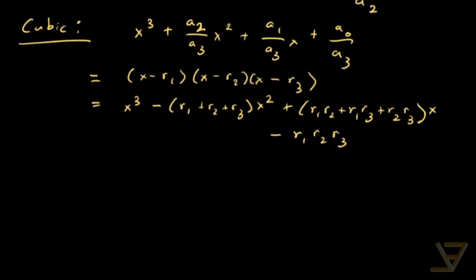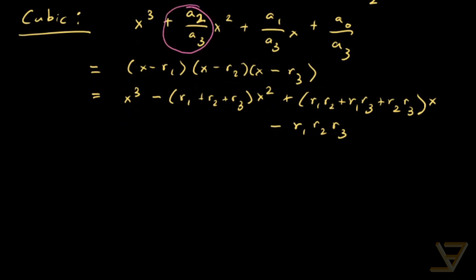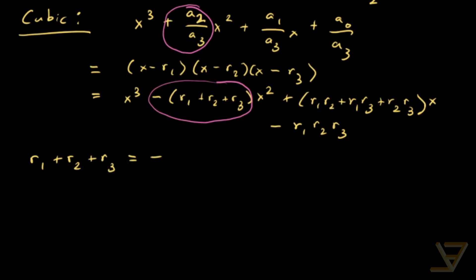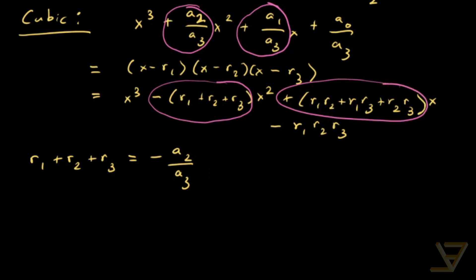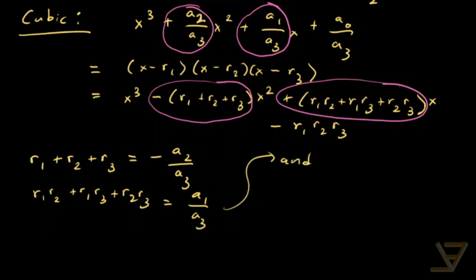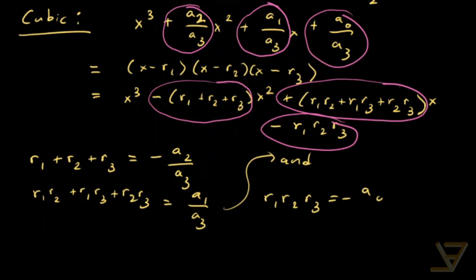Now let's compare coefficients. We match a_2/a_3 with -(r_1 + r_2 + r_3), giving r_1 + r_2 + r_3 = -a_2/a_3. Then we match a_1/a_3 with the symmetric sum, giving r_1 r_2 + r_1 r_3 + r_2 r_3 = a_1/a_3. And finally, a_0/a_3 matches with -r_1 r_2 r_3, giving r_1 r_2 r_3 = -a_0/a_3.